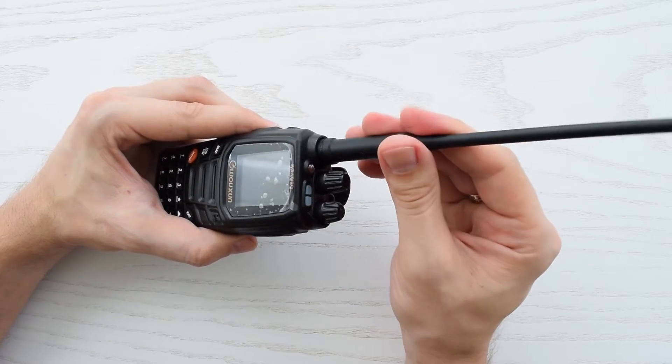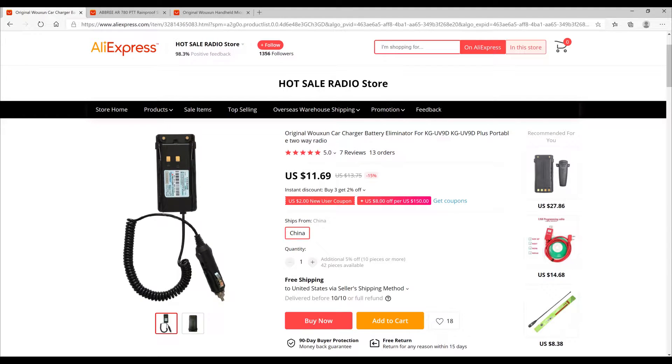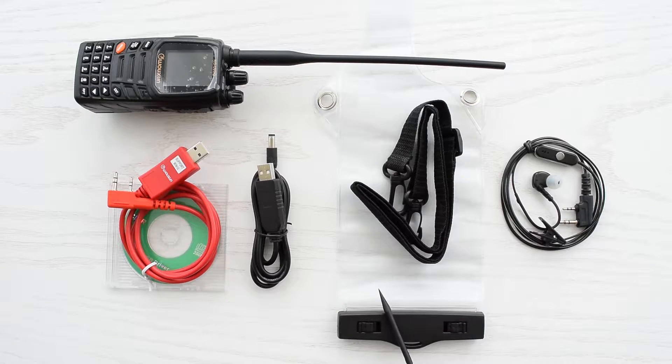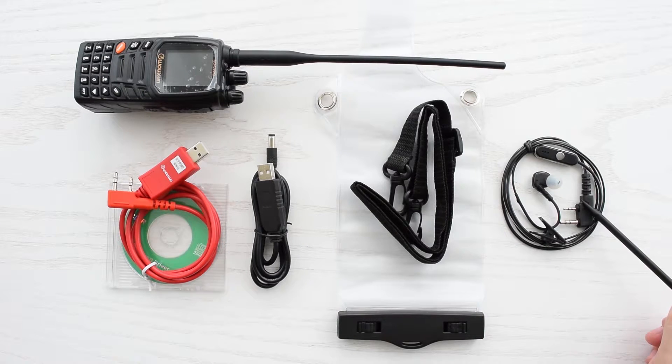And a whole bunch of other accessories as well. You can buy USB programming cable, USB charging cable, battery eliminator, waterproof pouch, speaker mic or a headset like this, which costs just about $5 but provides really high-quality sound. All the links in the description below.